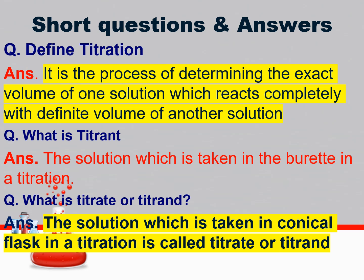At the end, here are short questions and answers — prepare these for your viva exam. Define titration: it is the process of determining the exact volume of one solution which reacts completely with a definite volume of another solution. What is a titrant? The solution which is taken in the burette in a titration is the titrant. What is a titrate? The solution which is taken in a conical flask in a titration is called the titrate.